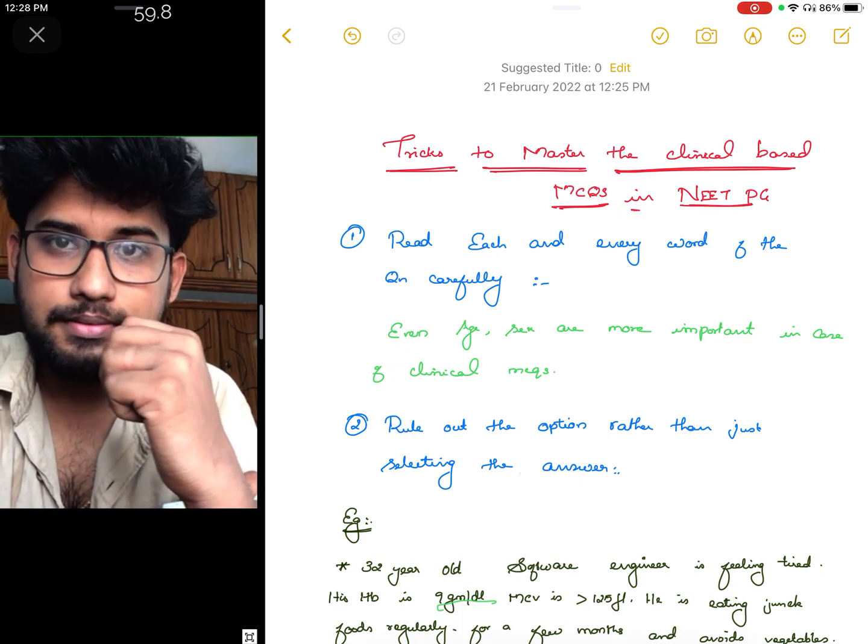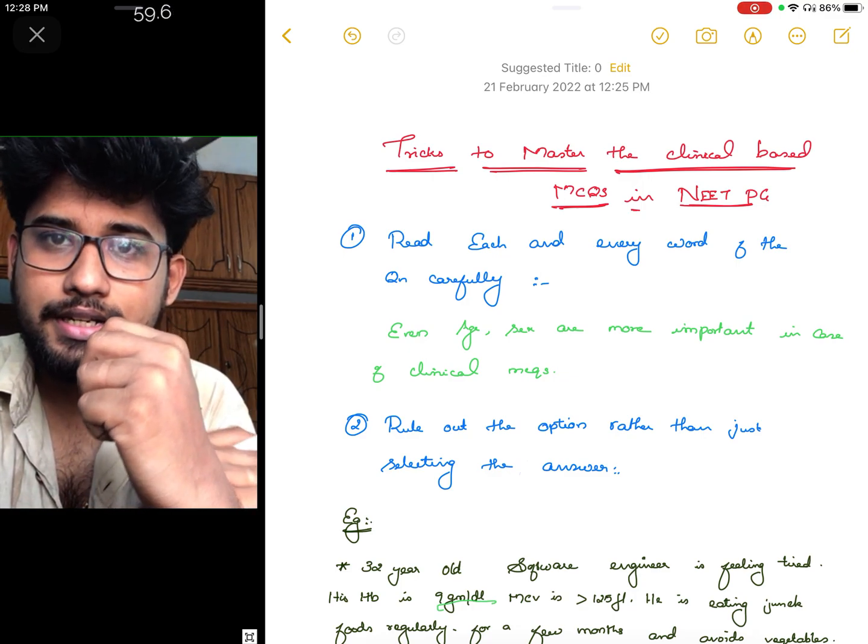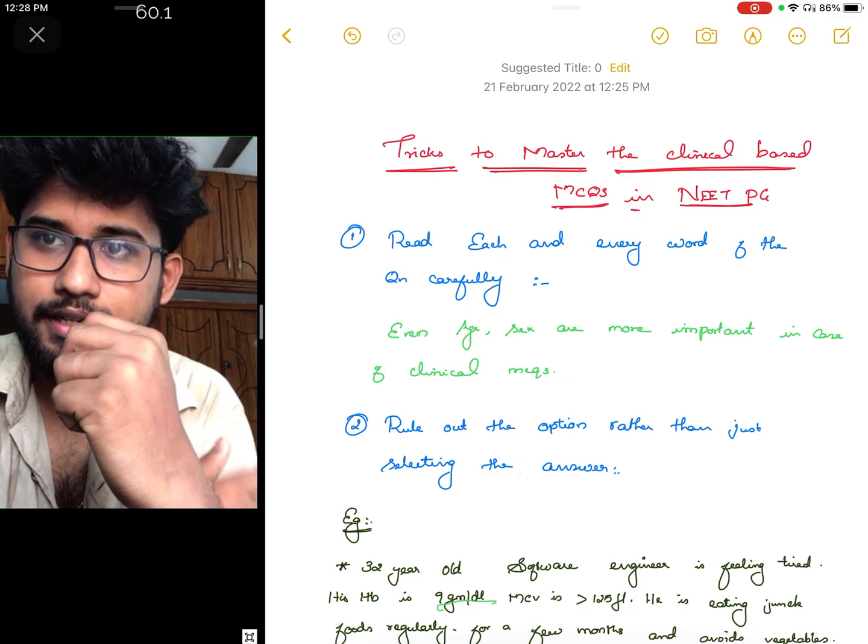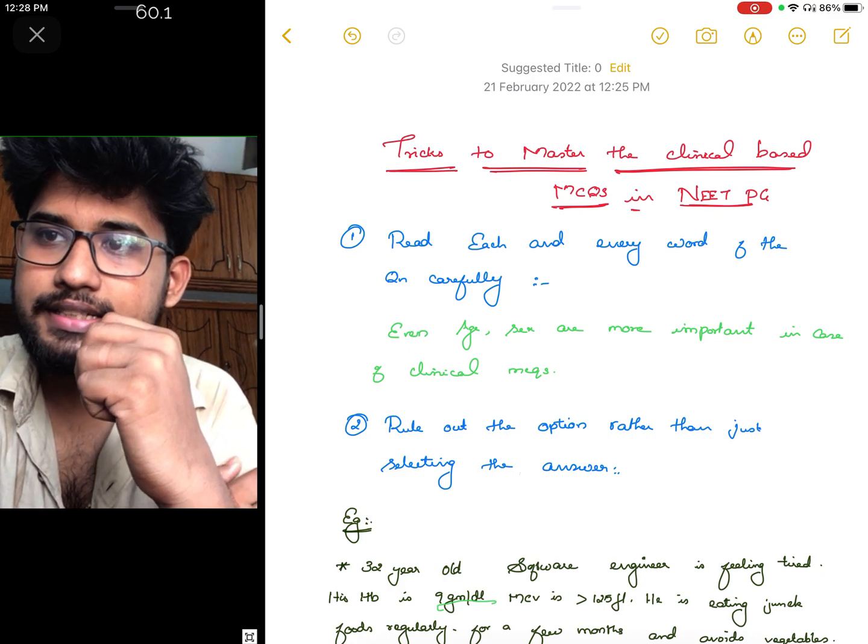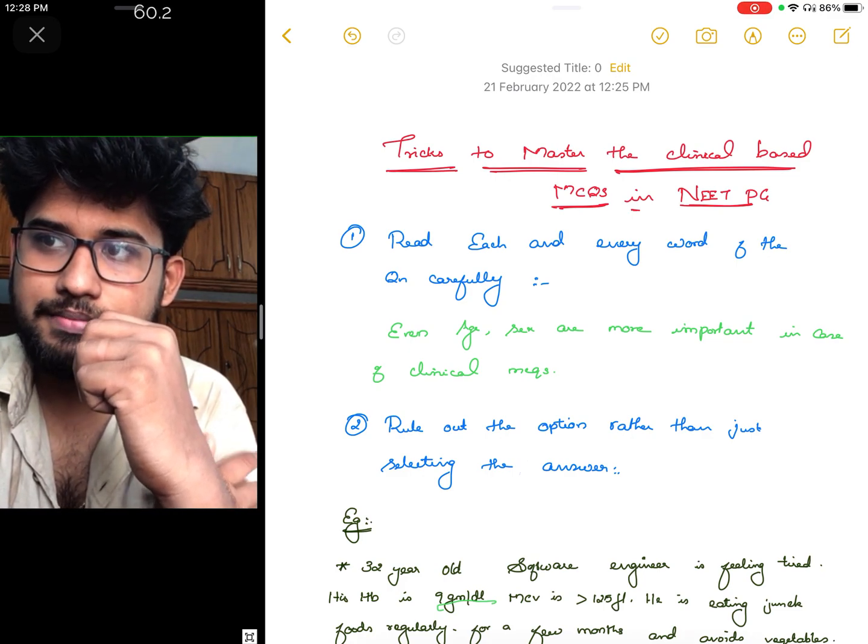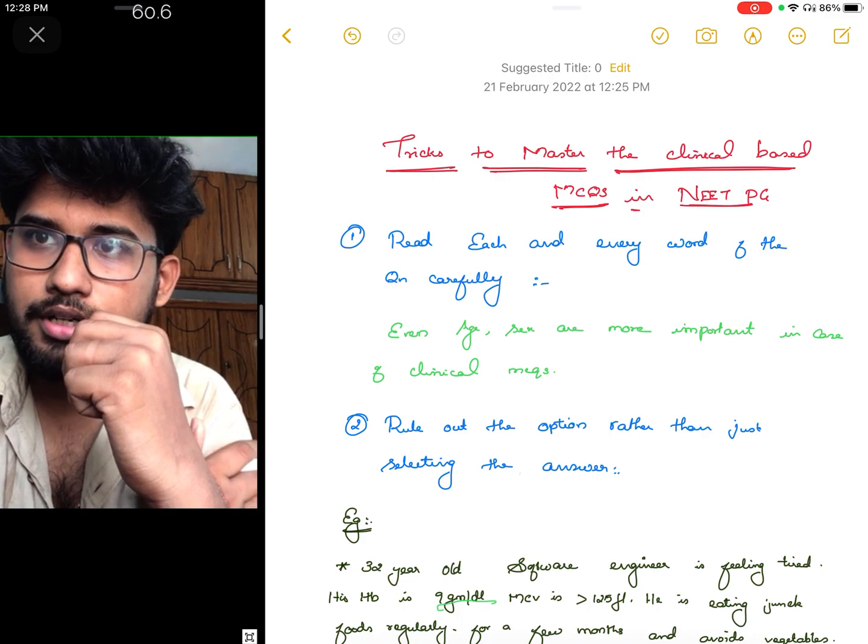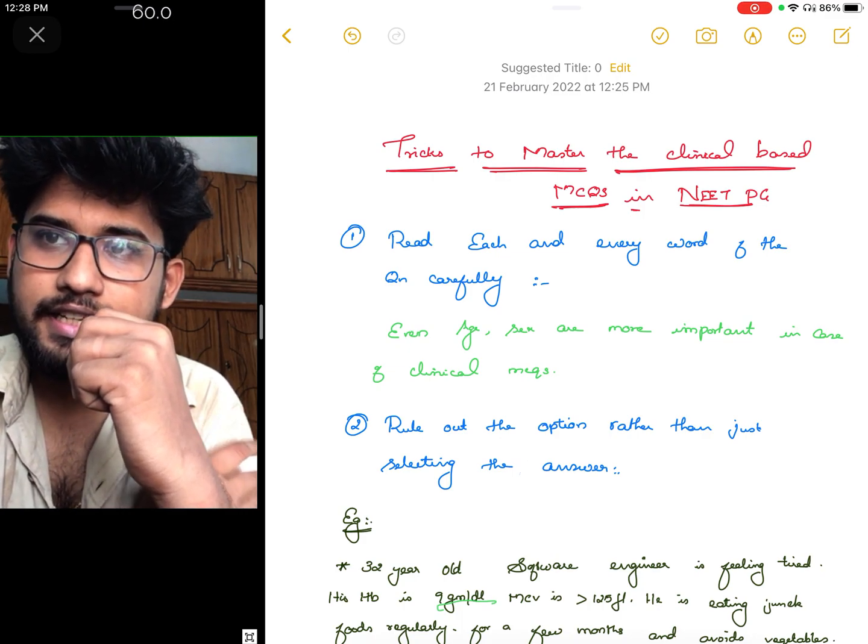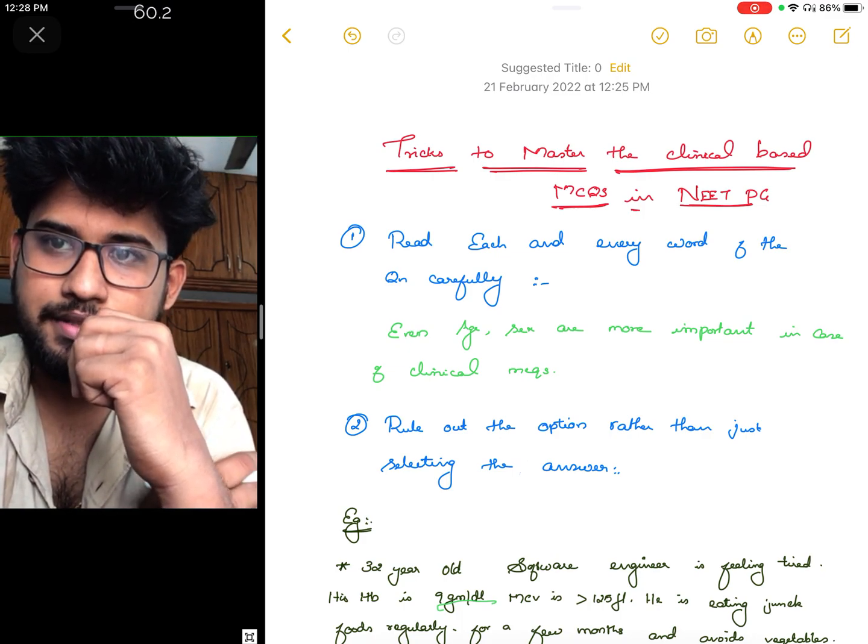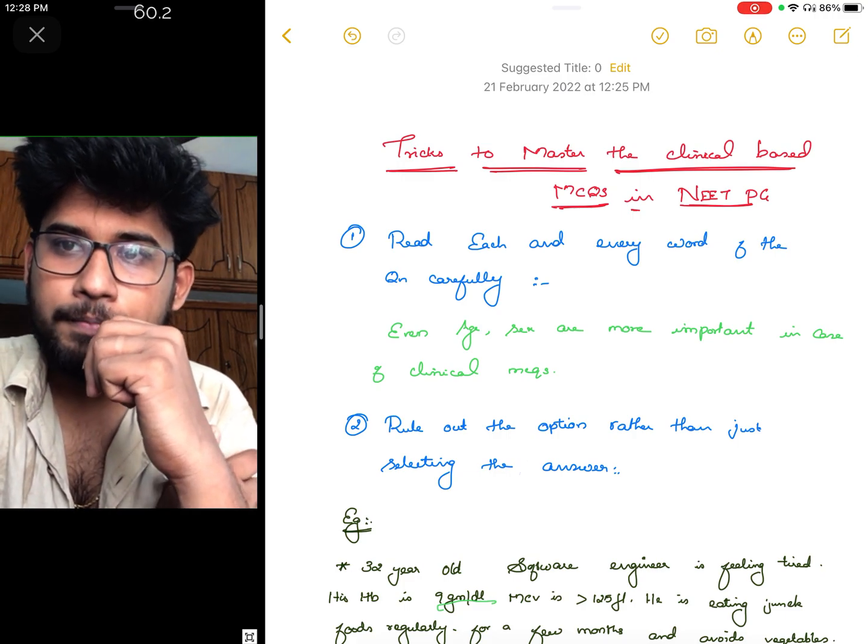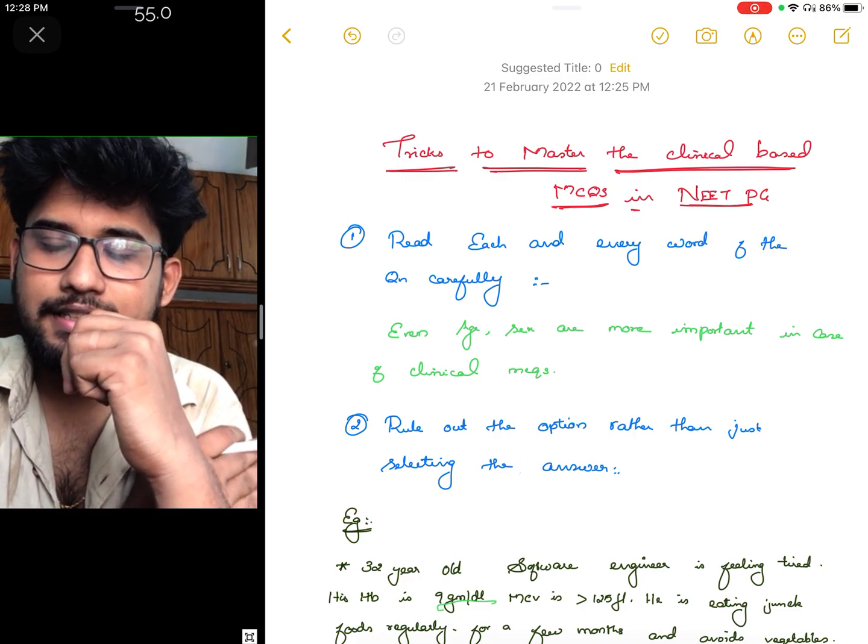Number one: read each and every word of the question carefully. This is the area where some aspirants make a mistake. They won't read each and every word of the clinical MCQs correctly. Even the age and sex are more important in finding the clinical-based MCQs, so give more importance to reading each and every word.